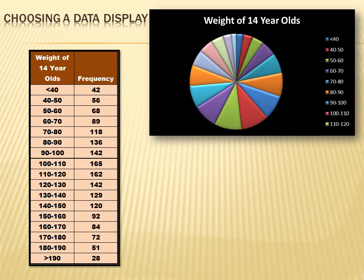We could put this in a pie chart or circle graph, with a color representing each of the weight ranges. For instance, less than 40 pounds is dark blue, 40 to 50 pounds is red, 50 to 60 pounds is another color, and 60 to 70 pounds is another. But I look at that pie chart and it doesn't really tell me anything quickly — I don't think it communicates the information very well.